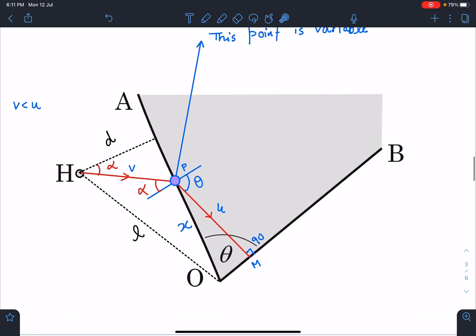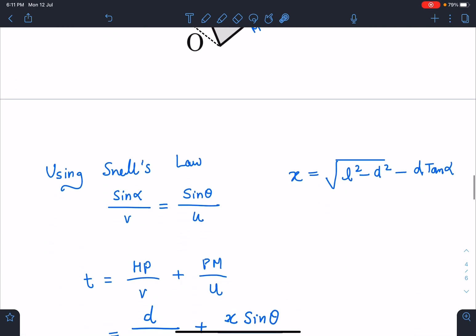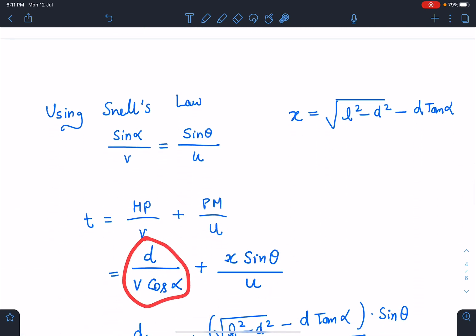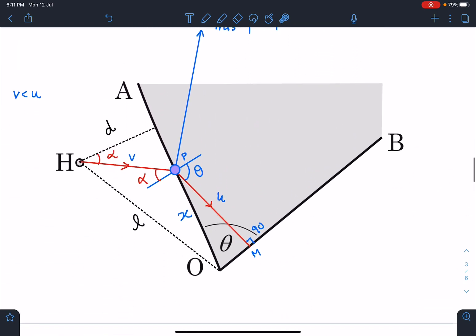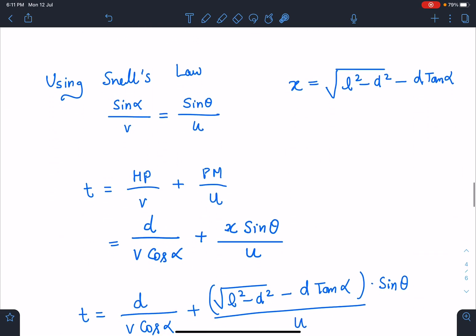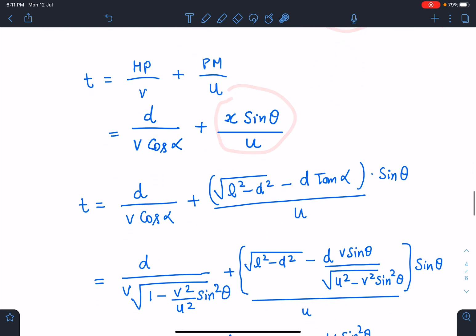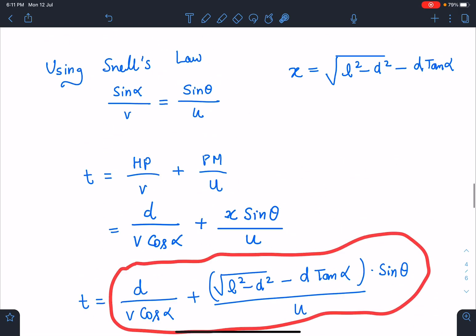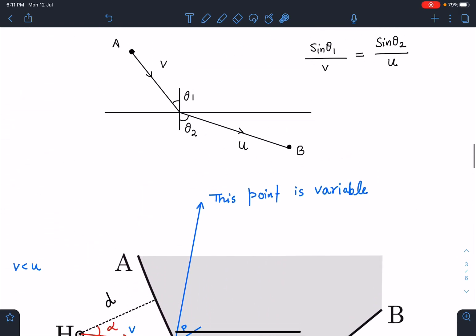So d / (cos α × v), and plus PM is x sin θ. If this is going to be θ and this is x, this length is x sin θ, so x sin θ / u. Now this value of x I am going to substitute in this equation and I am going to get the entire equation in α. Alpha value is known to me and that is sin α = v sin θ / u.